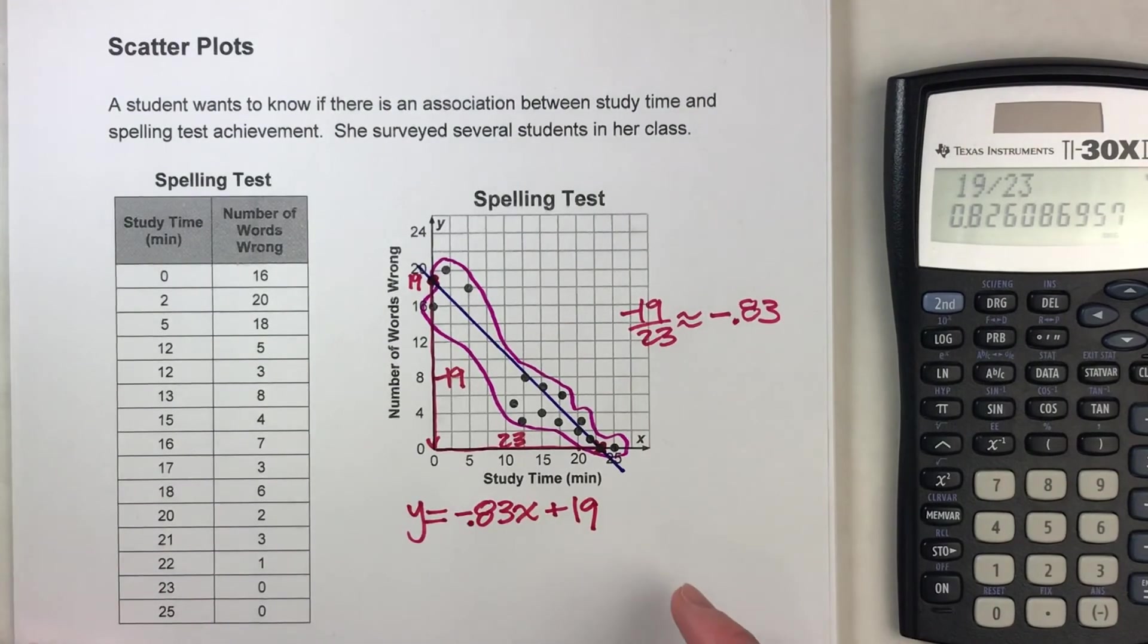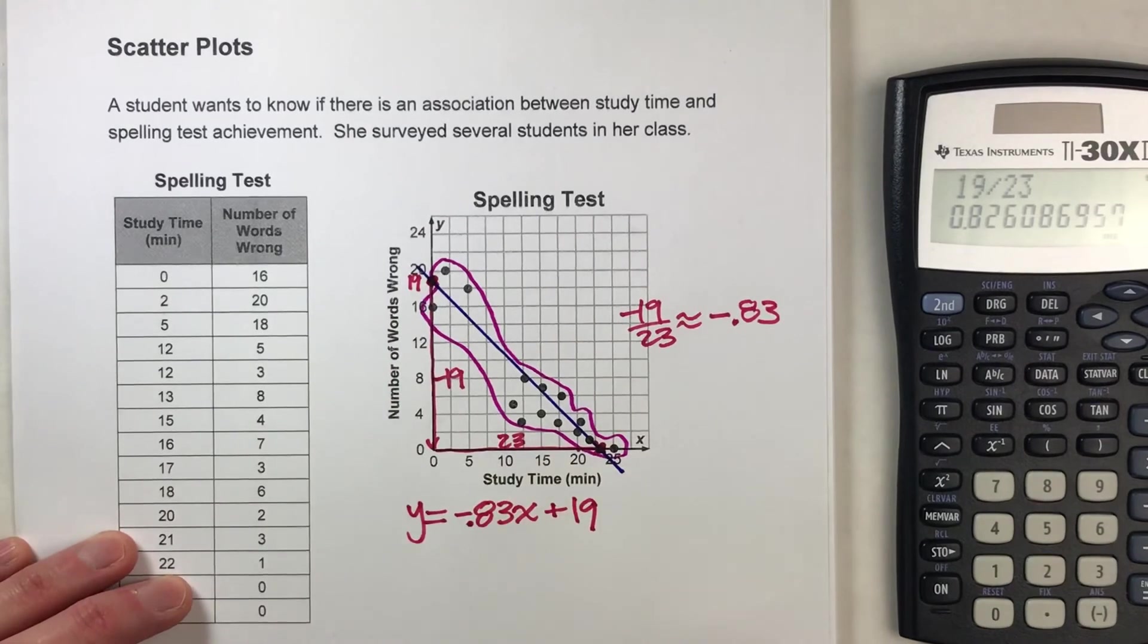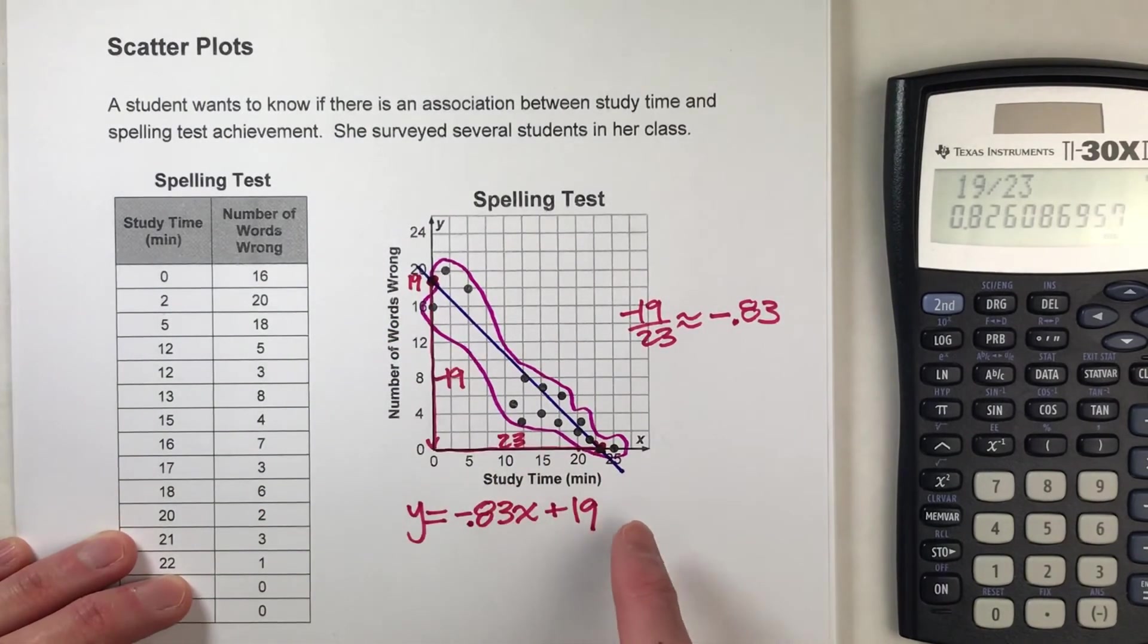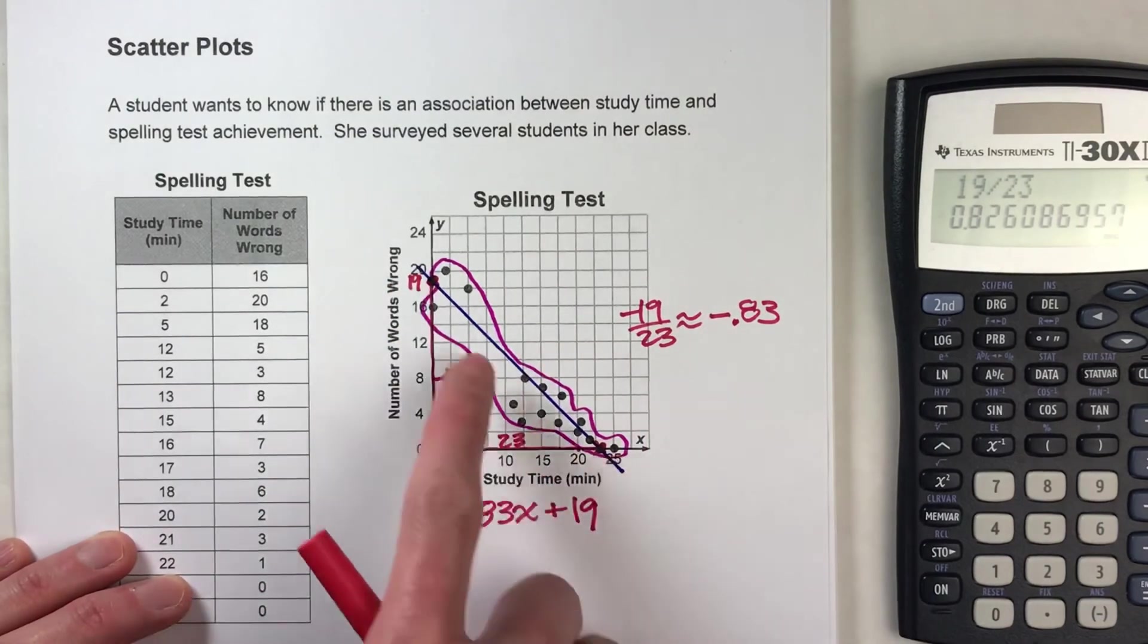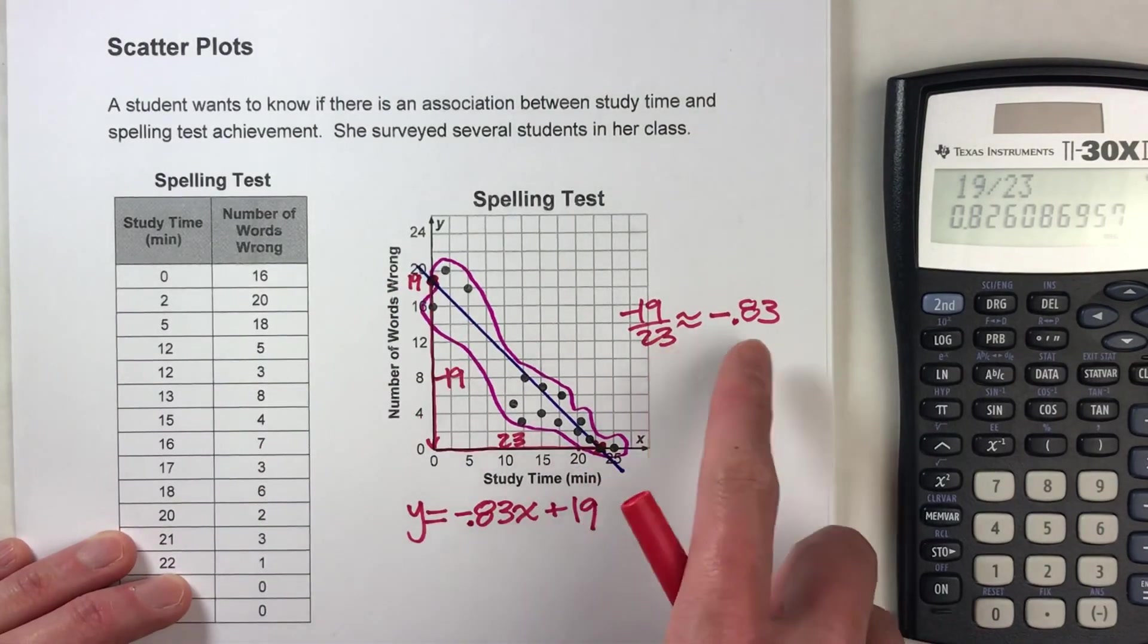So notice, to write the equation for a trend line, it's not that much different than writing the equation for a normal line. But you do have to do some estimating, and you do have to pick your points for your slope a little strategically. Picking points as far away as possible from each other makes your slope a lot more accurate.